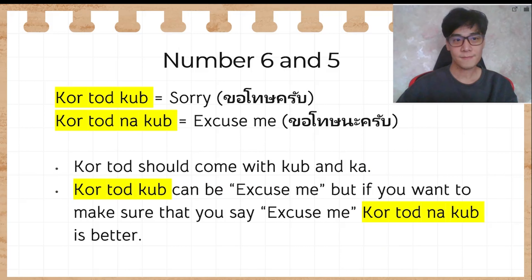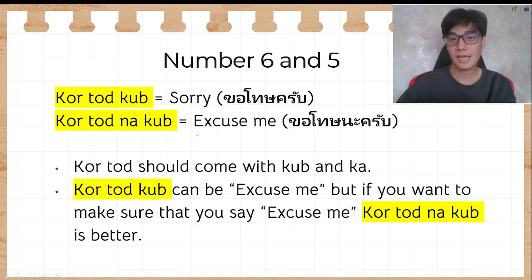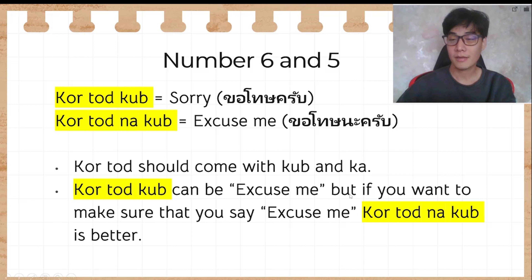Number 6 and 5: ขอโทษครับ means 'sorry' and ขอโทษนะครับ means 'excuse me.' The difference is just the word นะ. ขอโทษ should come with ครับ because being polite makes the apology feel more sincere. ขอโทษครับ can also mean 'excuse me,' but ขอโทษนะครับ is better for that. ขอโทษครับ is more of a deep sorry, while ขอโทษนะครับ is definitely 'excuse me.'